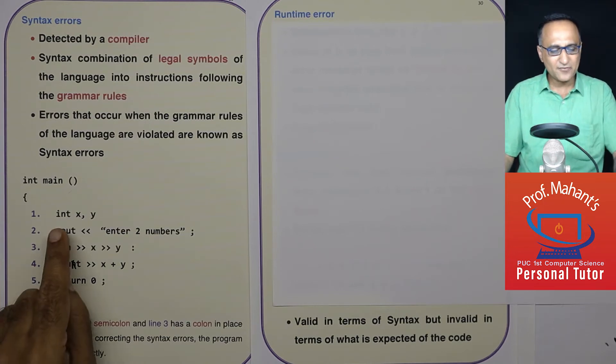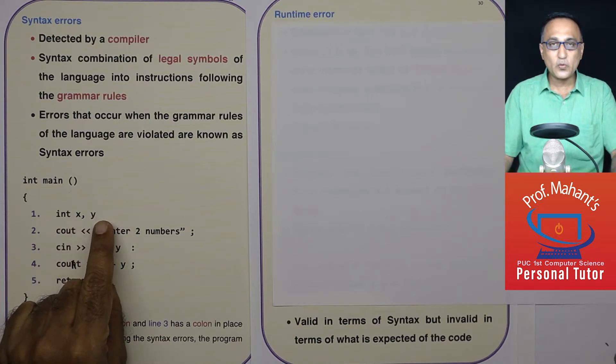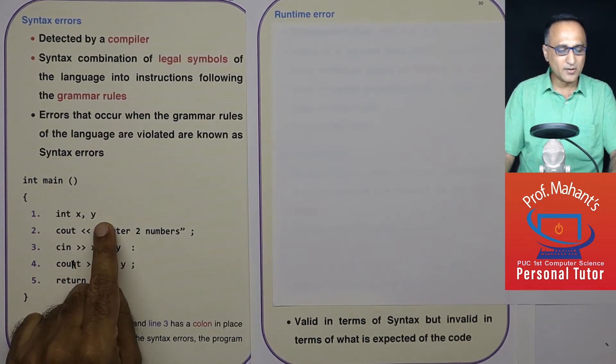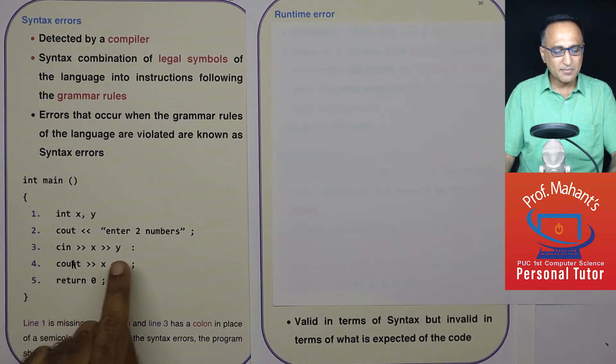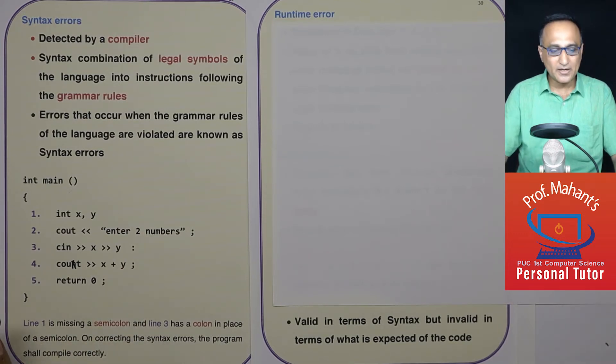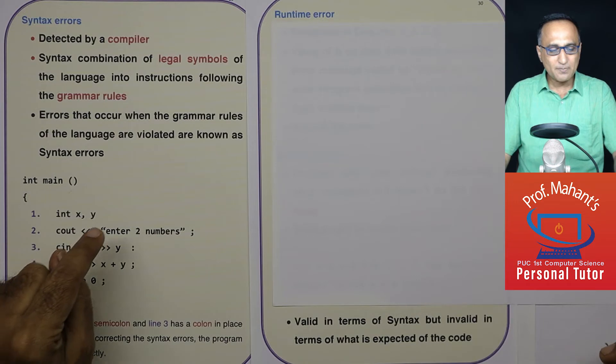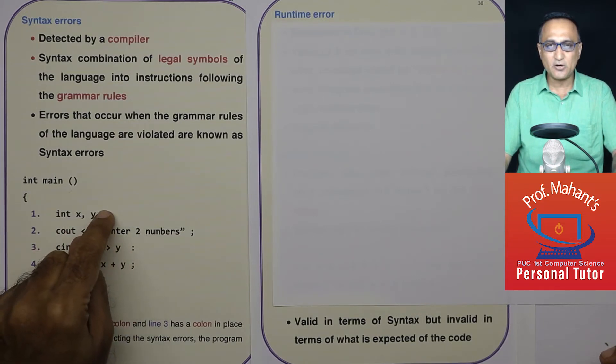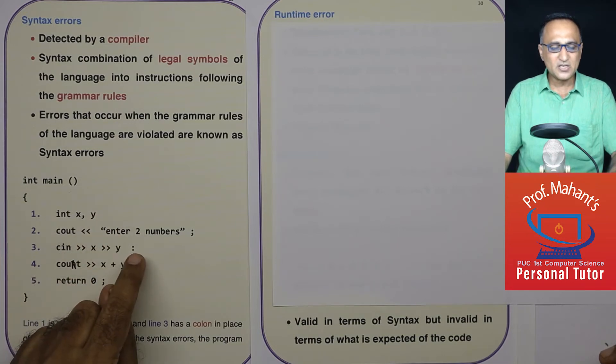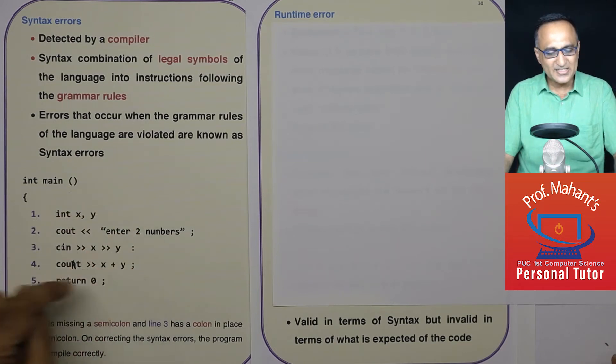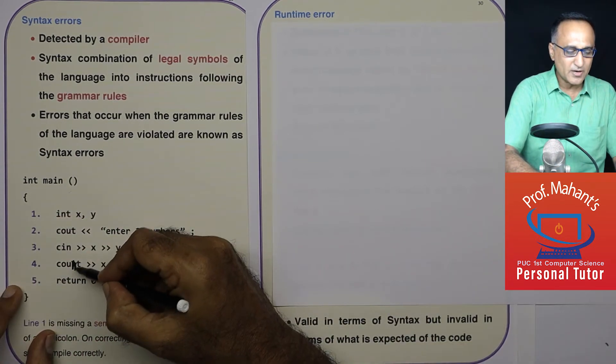Now here if you see after this first line, I am required to end that line with a semicolon. So on line number one, I have missed the semicolon. On line number three, I am required to put a semicolon, but I have put a colon. So these are examples of syntax errors which will pop up when you try to compile your program. So compilation will pop up errors on line number one and line number three saying that you have missed a semicolon on line one and you put a colon instead of a semicolon. So once you correct these particular errors, the program will run fine.